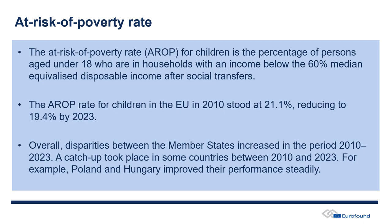That is the overall AROPE child poverty indicator. Let's look more closely at the different components. The first is the risk of poverty rate — or AROP — measuring monetary poverty: the percentage of persons aged under 18 living in households with an income below 60% median equivalised disposable income after social transfers, which is a long way of saying low-income households. Here we've only reduced the rate since 2020 from 21% to 19% in 2023.